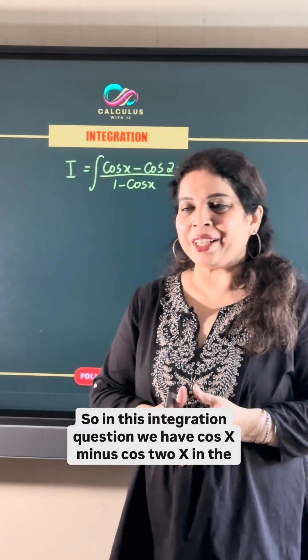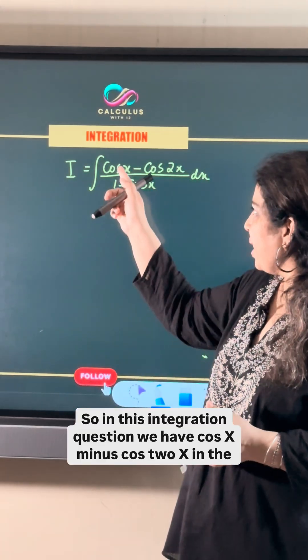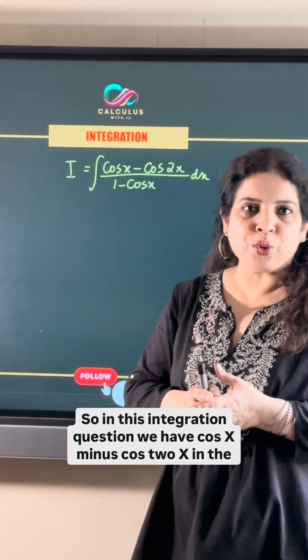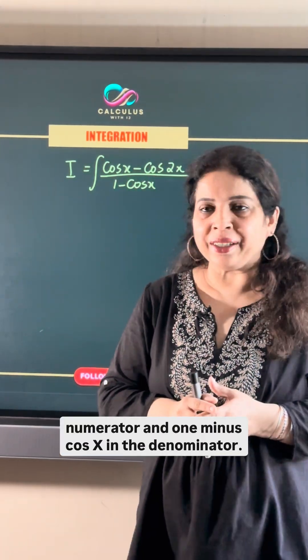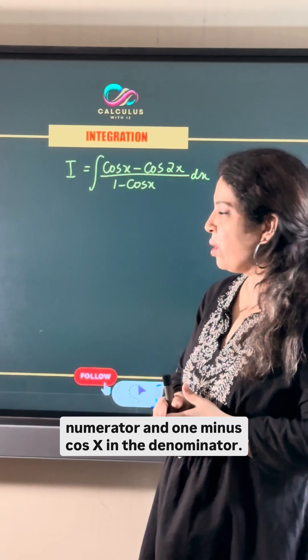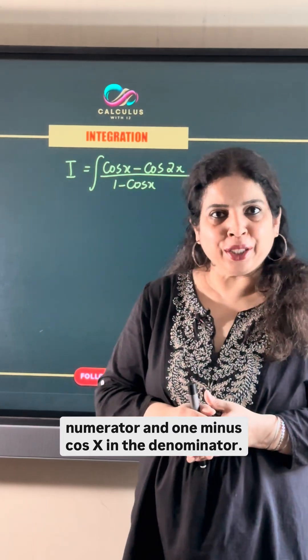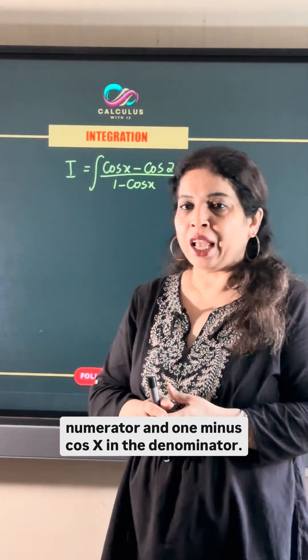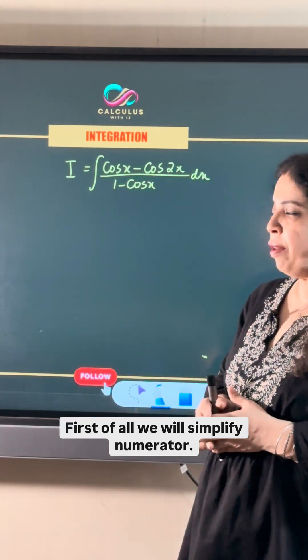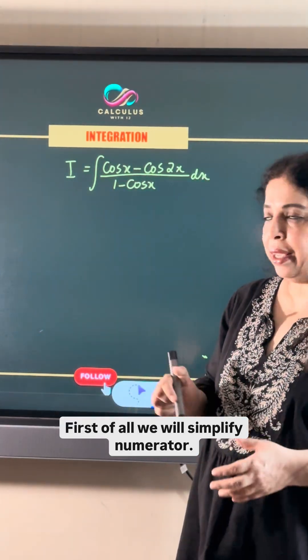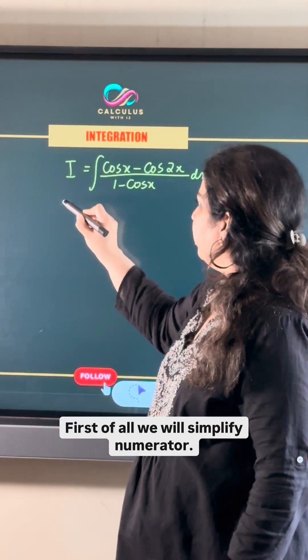In this integration question, we have cos x minus cos 2x in the numerator and 1 minus cos x in the denominator. First of all, we will simplify the numerator.